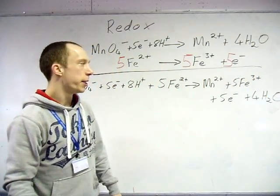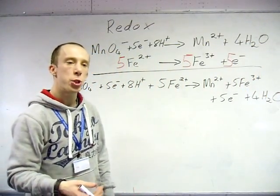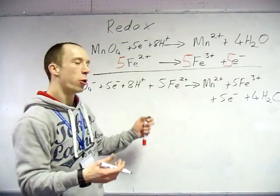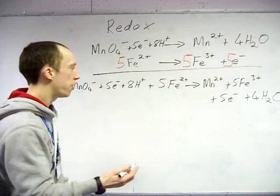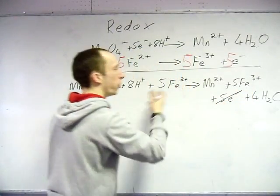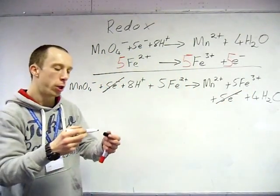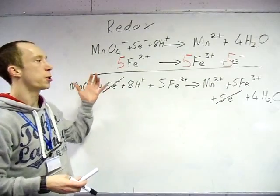So now what you would do is you would combine all of the reactants and all of the products. And the final bit to do: cancel off anything which appears on both sides. So your electrons should always cancel. And what you are left with is your full ionic equation, your full redox reaction as well.